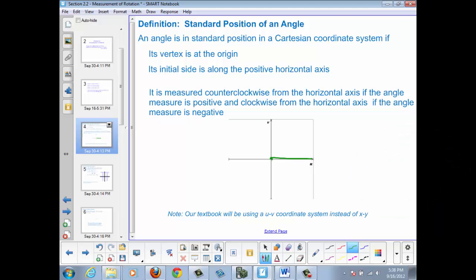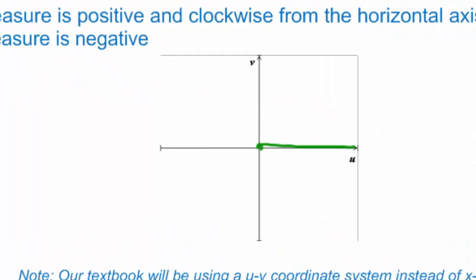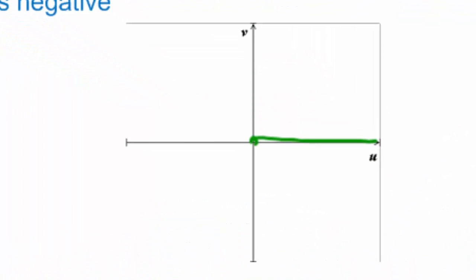It's measured counterclockwise from the horizontal axis if the angle measure is positive. So if I put the terminal side out here in the second quadrant, we'll have a positive angle if we start from the initial side and end up in that second quadrant. Theta will be greater than zero.